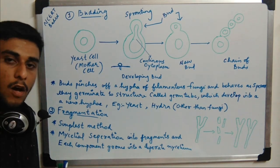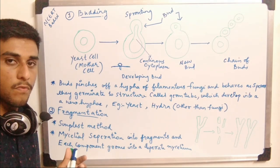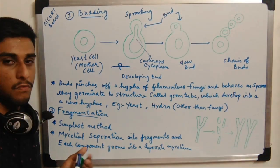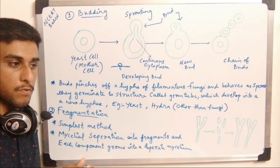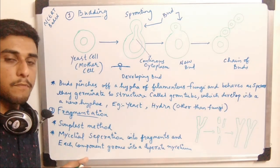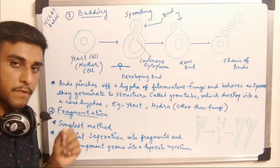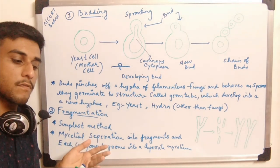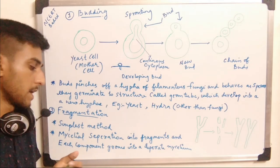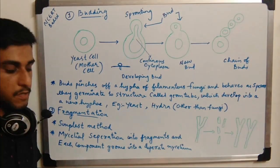Next is the process of fragmentation. From the word fragmentation itself, we can understand it means the breakdown of an organism's body. It may be due to external mechanical forces or internal metabolic forces. It is the simplest method of asexual reproduction.